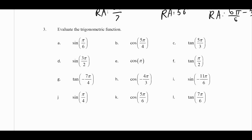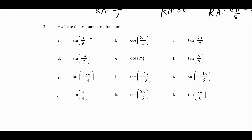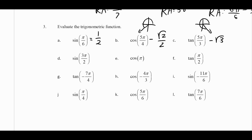Number three: evaluate each trigonometric function. I'll explain where the answers come from. Sine of π over 6 is the same as sine of 30 degrees, which is one half. Cosine of 5π over 4, which is 225 degrees, is negative — the reference angle is 45 degrees, so it's negative root 2 over 2. Tangent in the fourth quadrant with a reference angle of 60 degrees gives negative root 3. Sine of 3π over 2 is 270 degrees — the y-value there is negative 1.